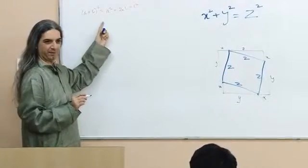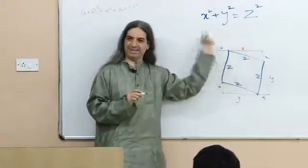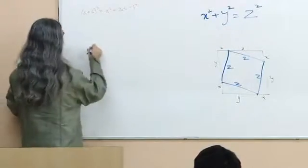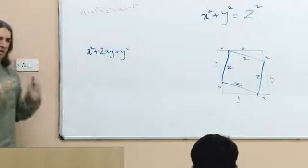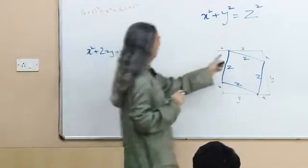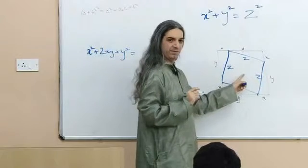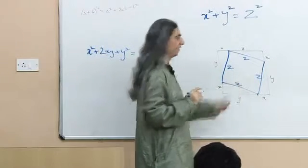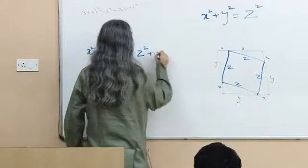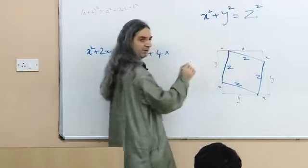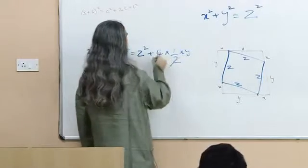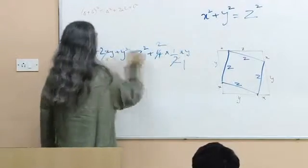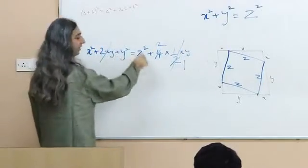The area of the square X plus Y is X plus Y the whole squared, which equals X squared plus 2XY plus Y squared. It also equals the area of the four triangles plus the area of the smaller square. The smaller square has area Z squared. Each triangle has area half times base times height, so four triangles give 2XY. The 2XY cancels on both sides, and you get X squared plus Y squared equals Z squared. Thank you.